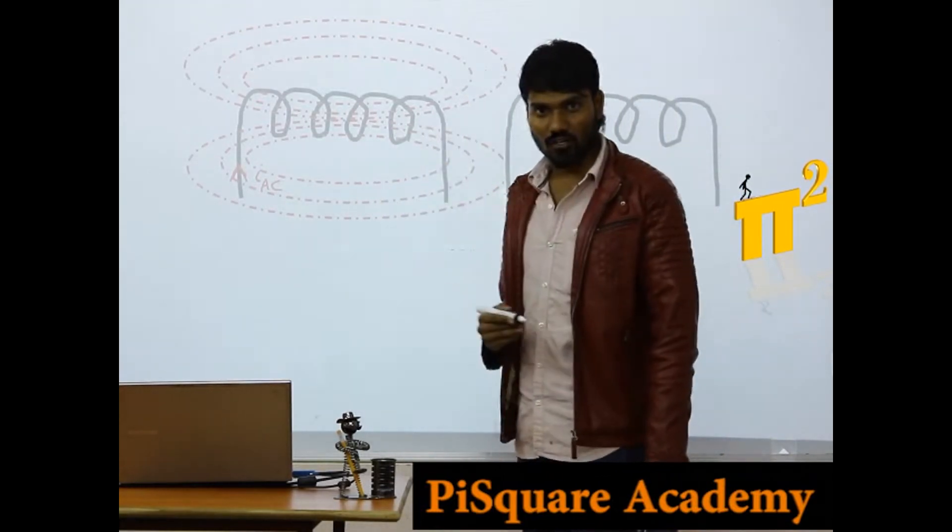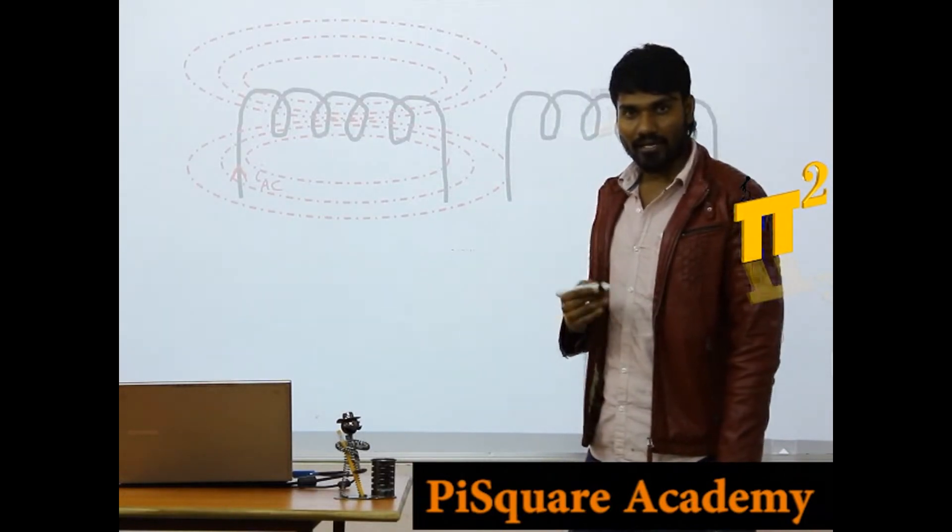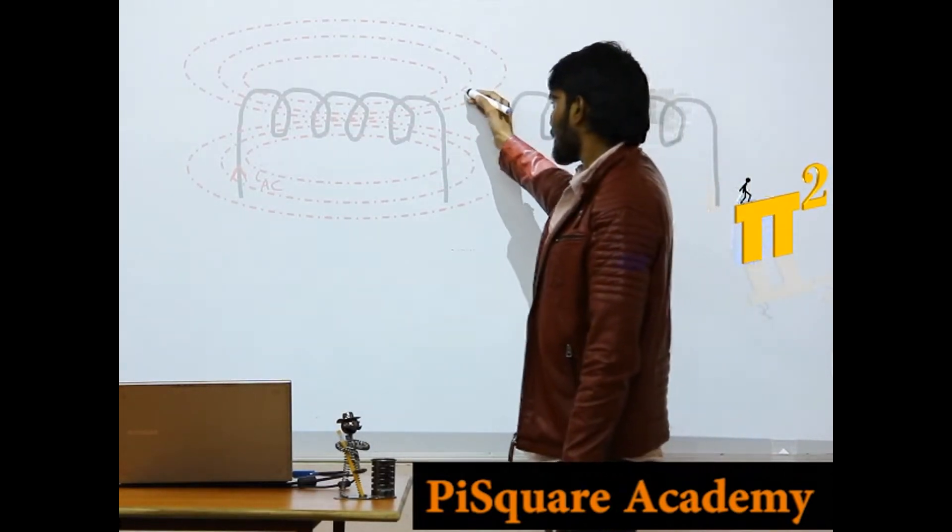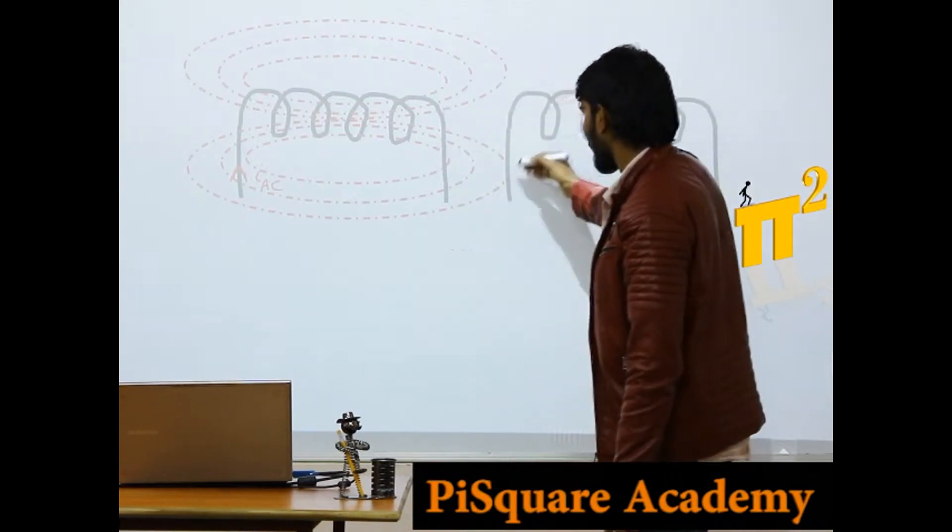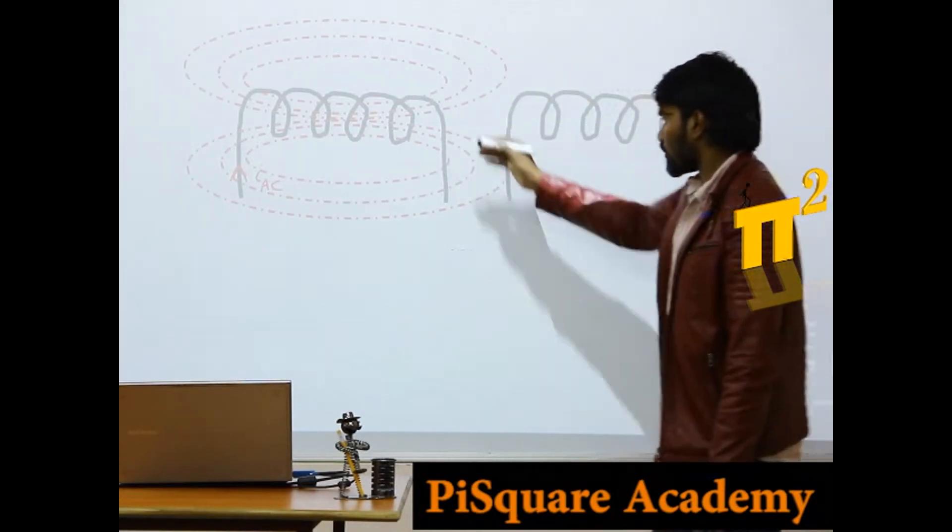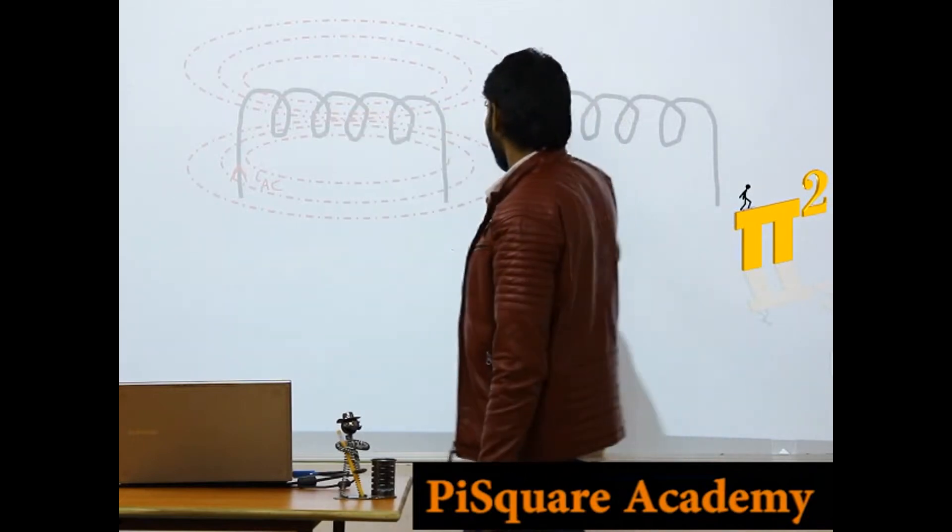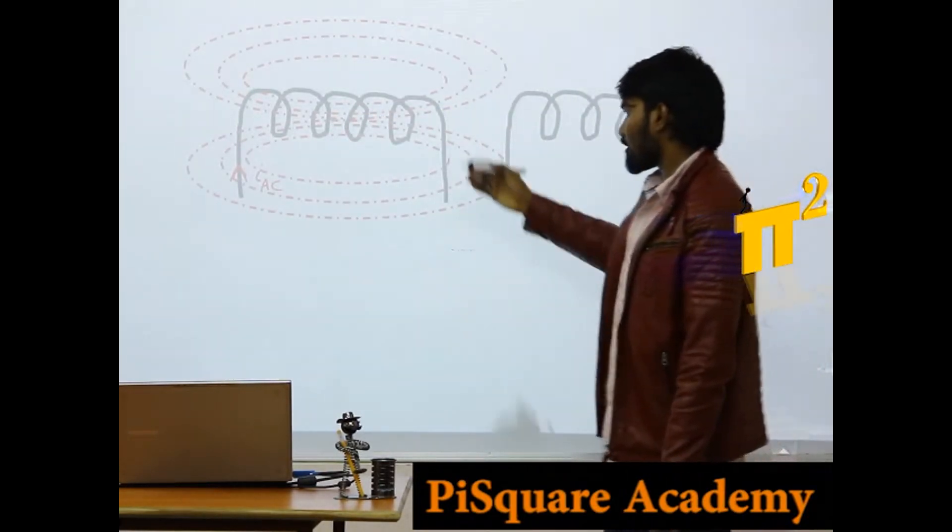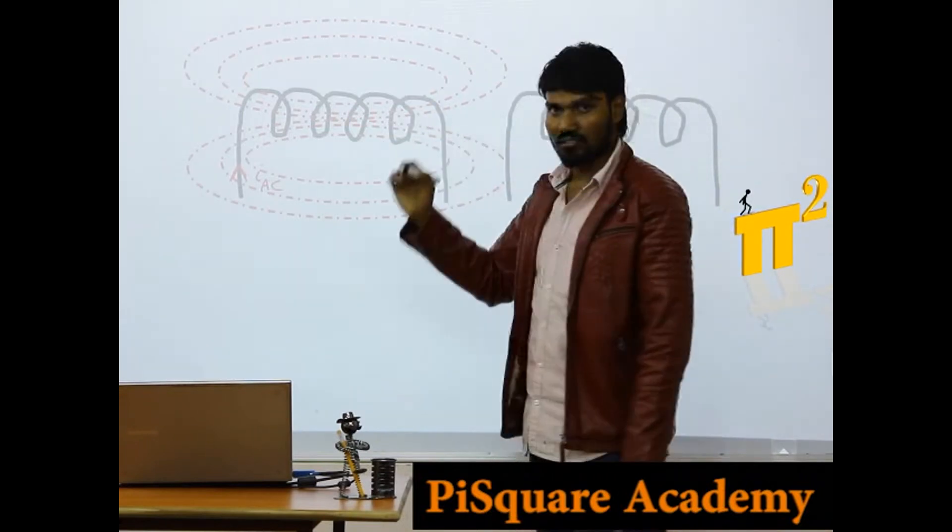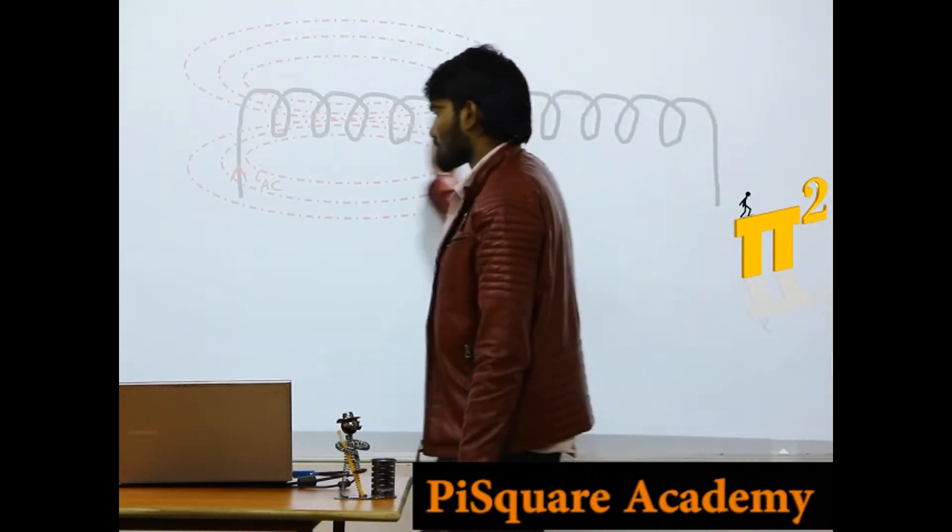Now this alternating flux is linking with this coil as well as this coil. So according to Faraday's law, magnetic flux is linking with a conductor. These also one conductor, so each and everything is one conductor. So as this flux is linking with all the conductors, there is some EMF induced in all these conductors.